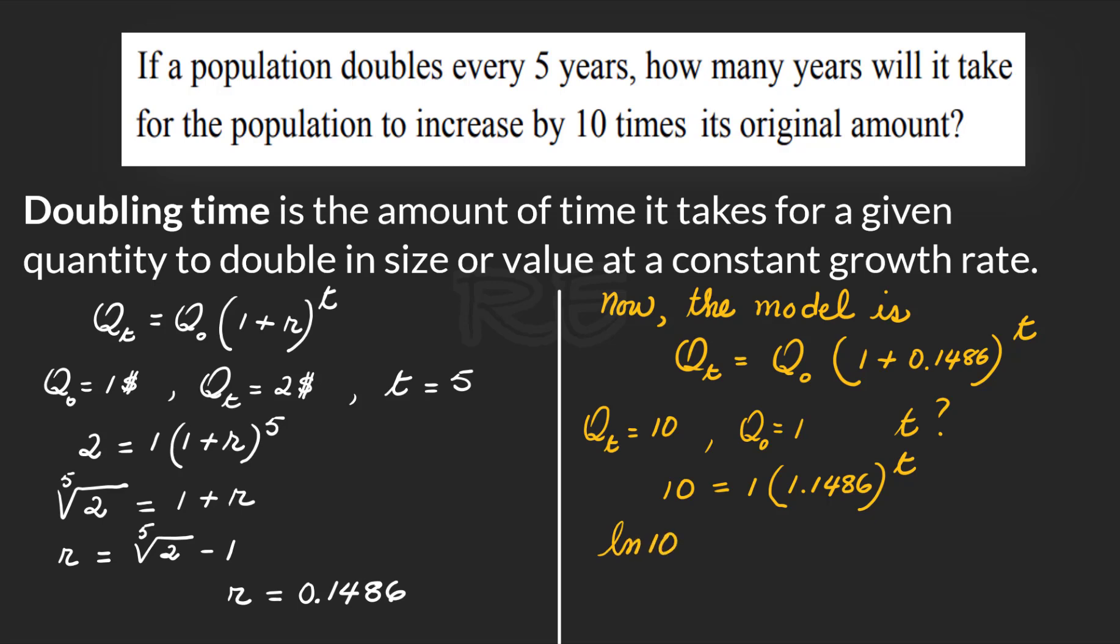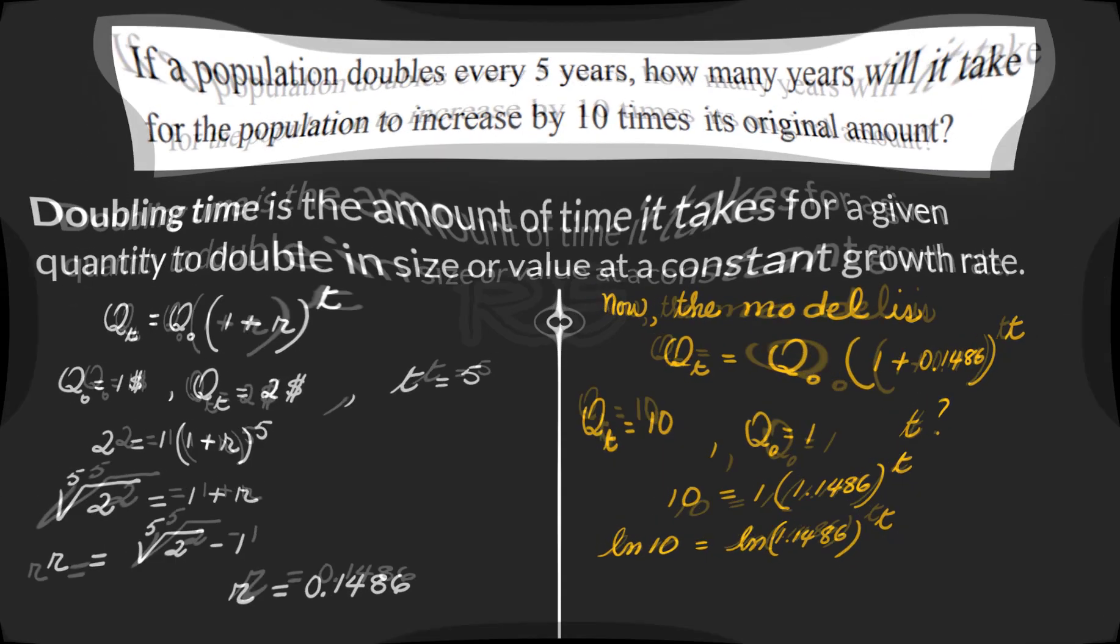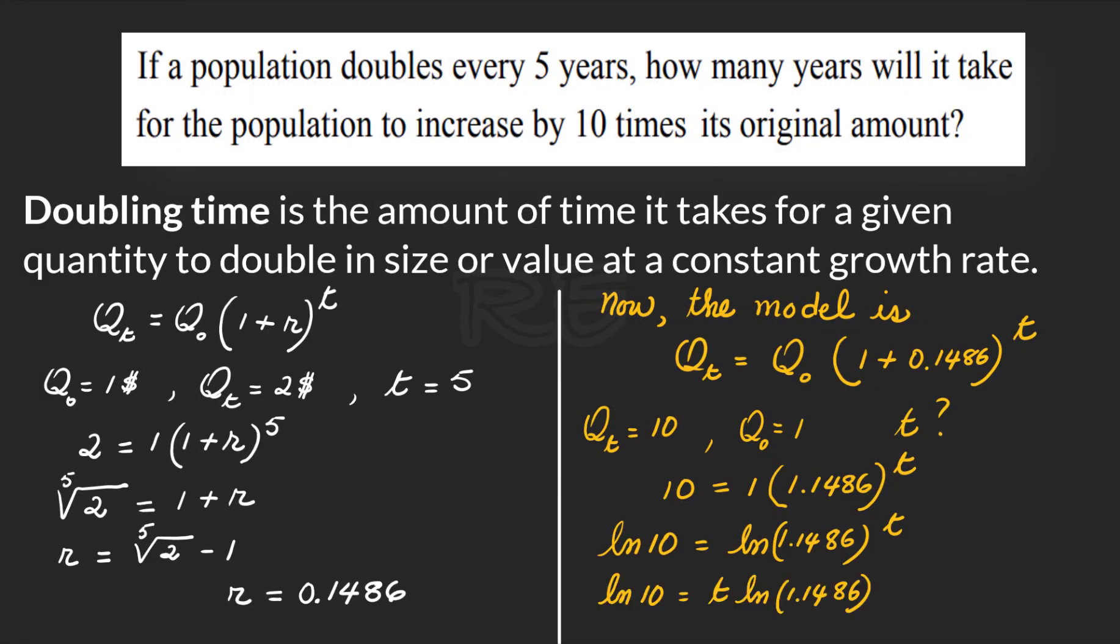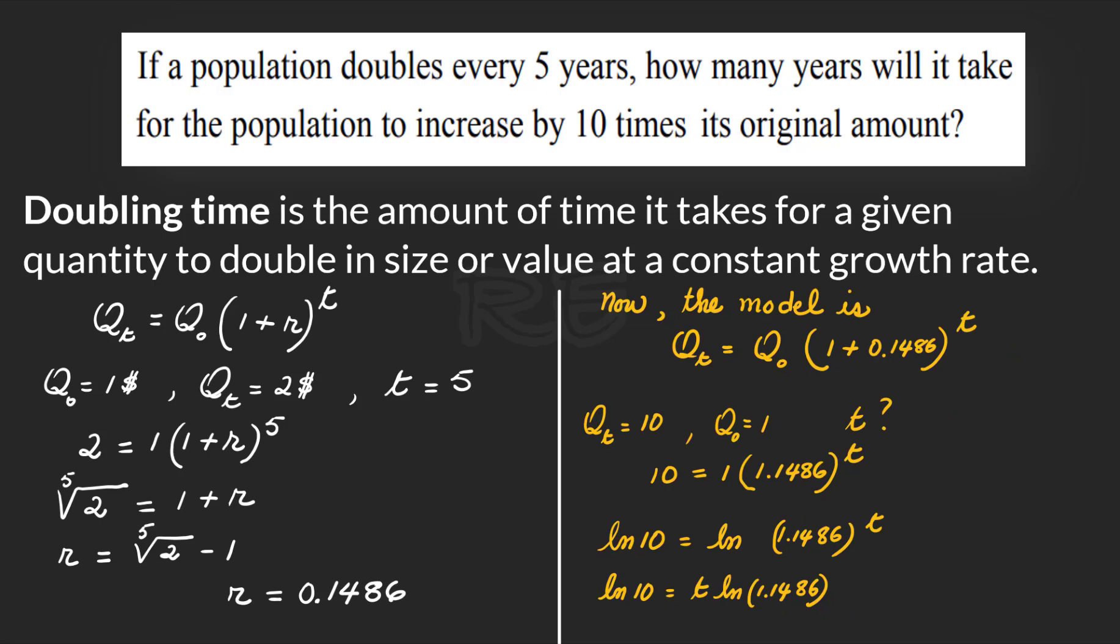Take the ln of both sides. ln(10) equals ln(1.1486^t), which using the exponential law is ln(10) = t·ln(1.1486).